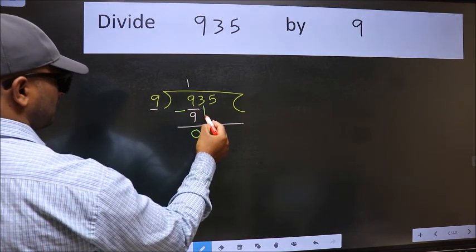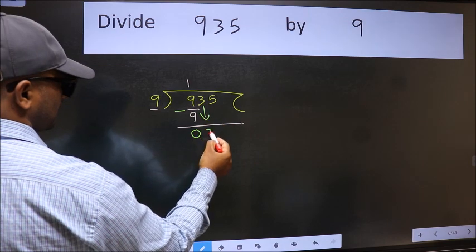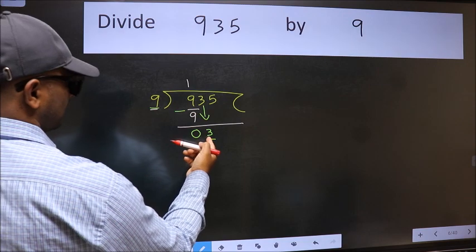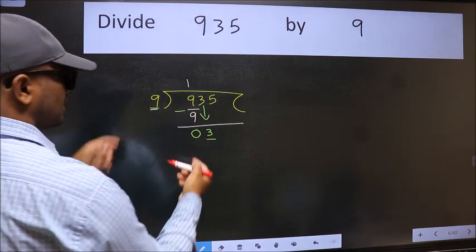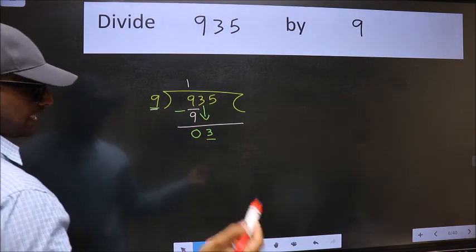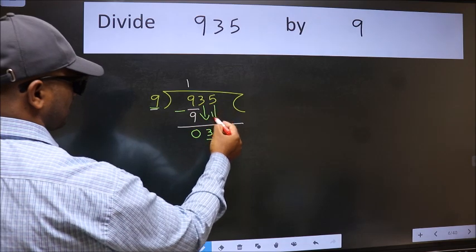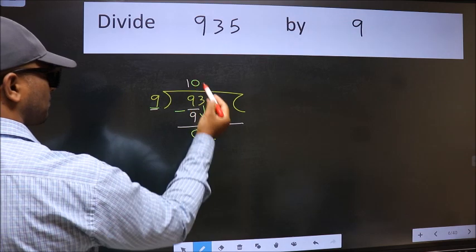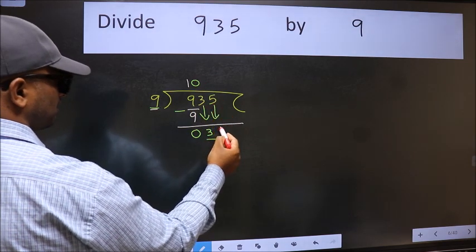After this, bring down the beside number. So 3 down. Now here we have 3 and here 9. 3 is smaller than 9. So we should bring down the second number. And the rule to bring down second number is, we should put 0 here. Then only we can bring this number down.